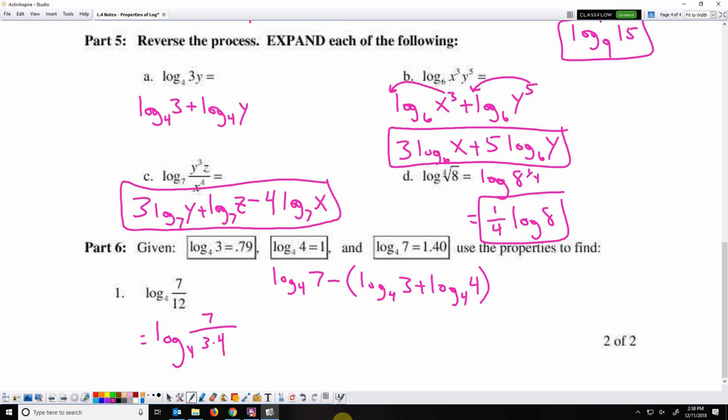And now I can substitute. Log base 4 of 7 is 1.40 minus log base 4 of 3 is 0.79, and log base 4 of 4 is 1. So that's 1.40 minus 1.79. I'm subtracting a larger number from a smaller number, so I know it's going to be negative. 1.40 minus 1.79 is negative 0.39.